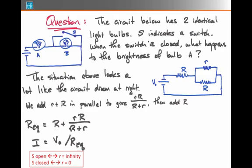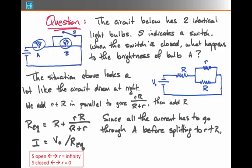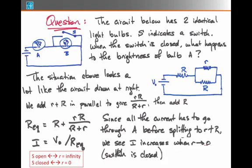If we remember that the total current coming out of the battery will equal the voltage of the battery divided by the equivalent resistance of the circuit, then we see that all the current that's coming out of the battery has to go through light bulb A, because it's in series, before it splits off into the switch plus the other light bulb. Current through A therefore increases when little r goes to 0, and the switch is closed.